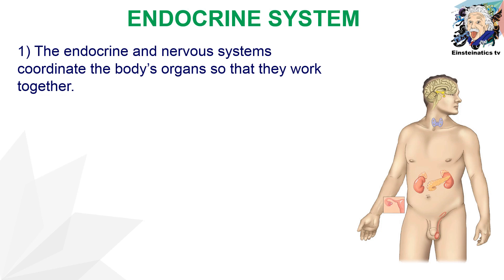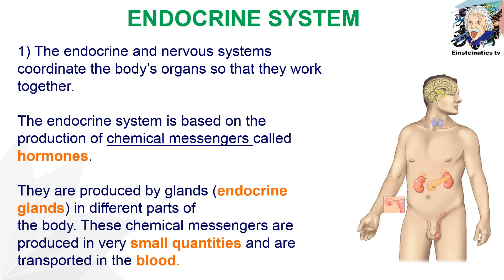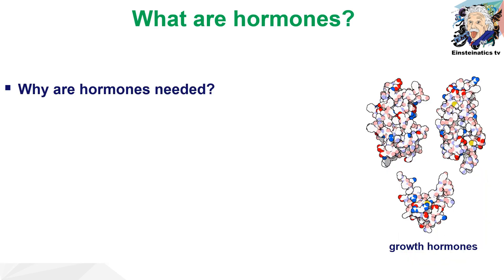The endocrine system and the nervous system coordinate the body's organs so that they work together using chemical messengers known as hormones. Hormones are produced by glands, also known as endocrine glands, in different parts of the body, and each endocrine gland has its own purpose or function. These chemical messengers are produced in very small quantities and are transported in the blood, so they do not need ducts because they are injected directly into the blood.